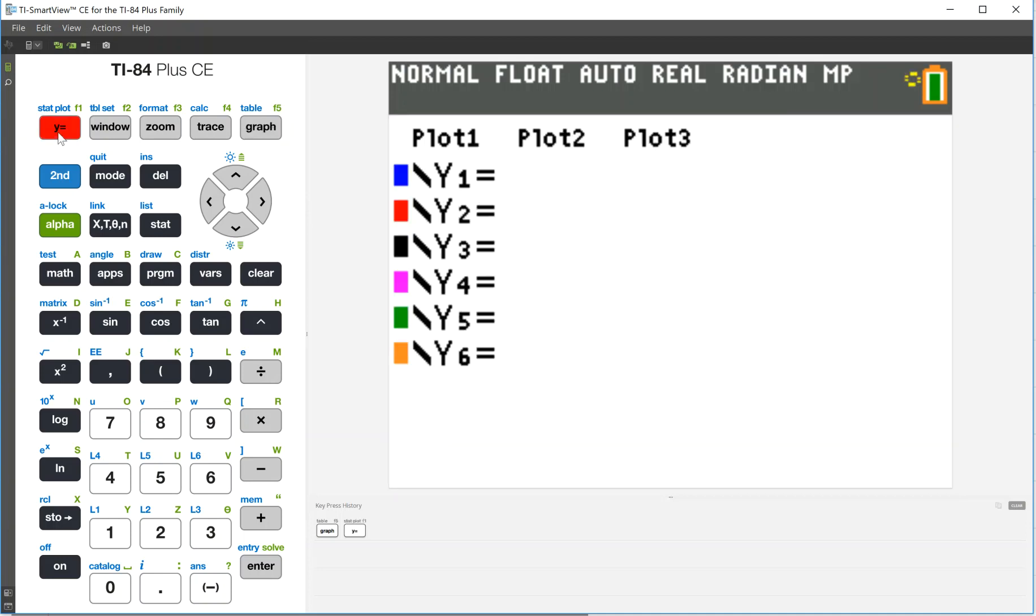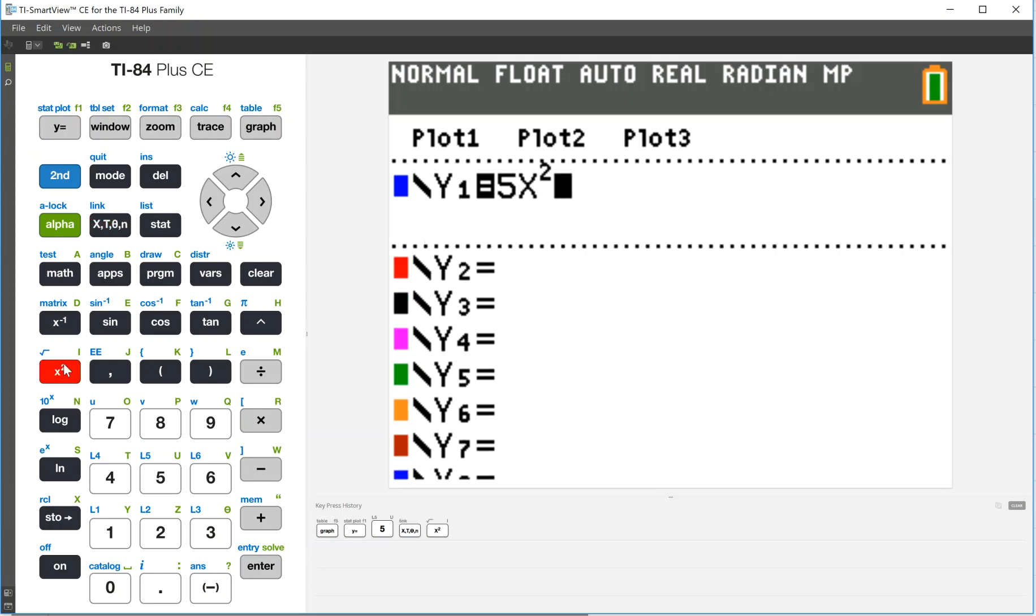So let's add something to it. So if we go to the y equals, you can see this is where we plug in our equation. So let's type it in: 5x squared plus 3x minus 4. And we can graph now.